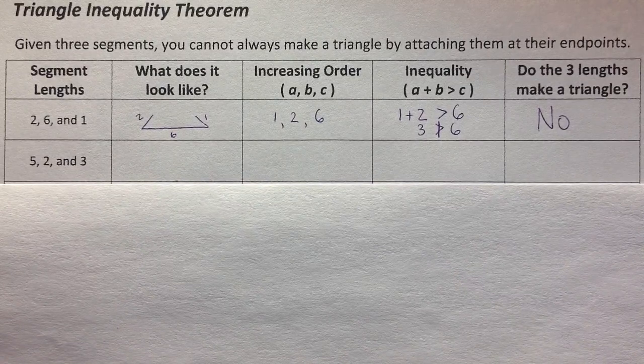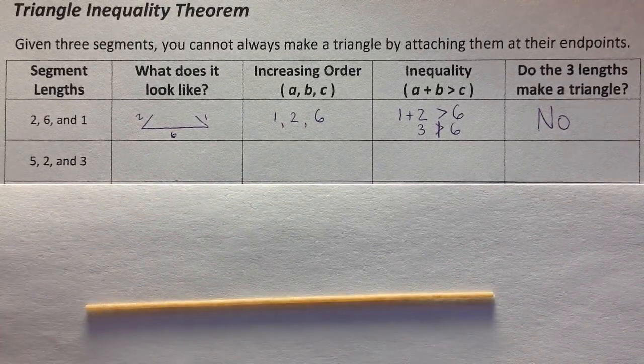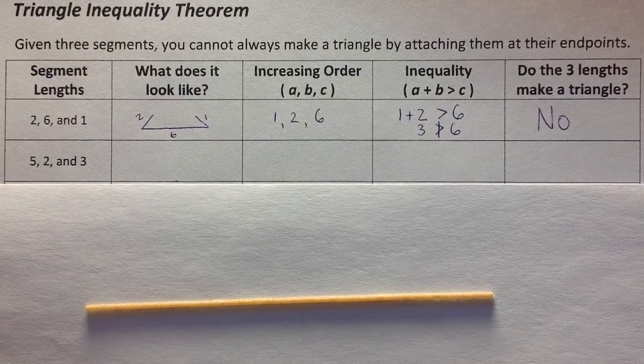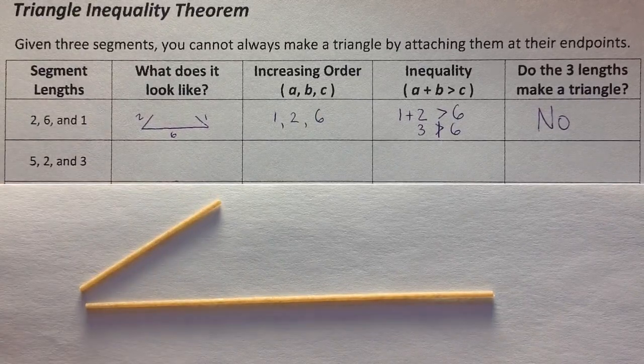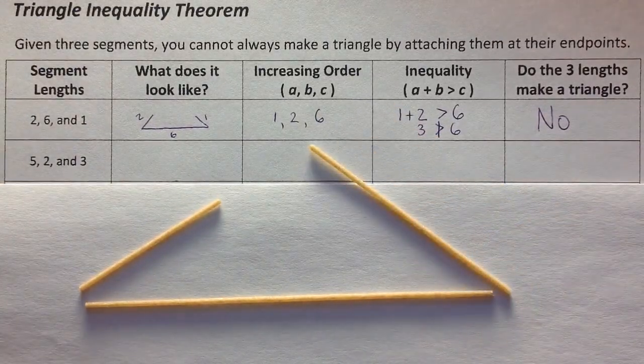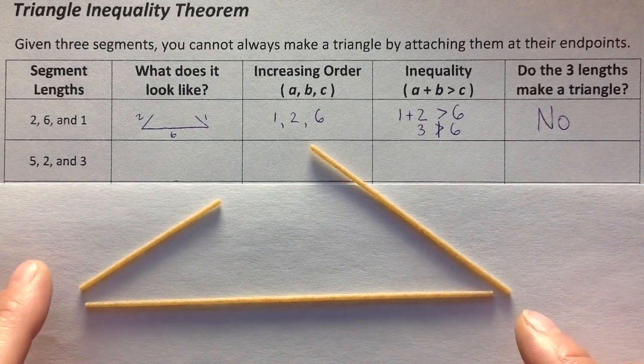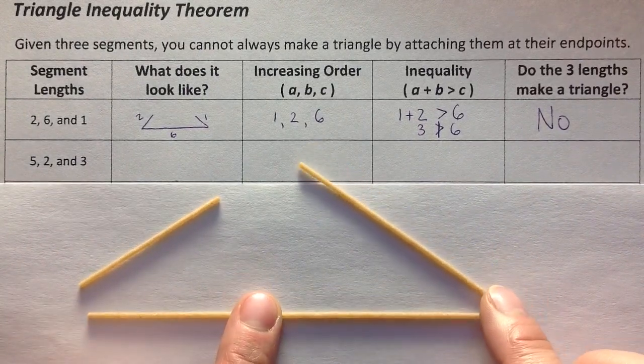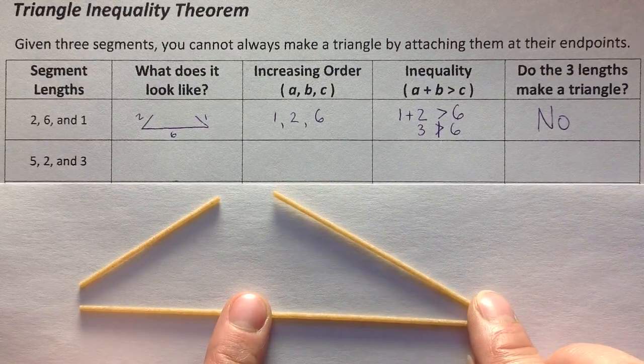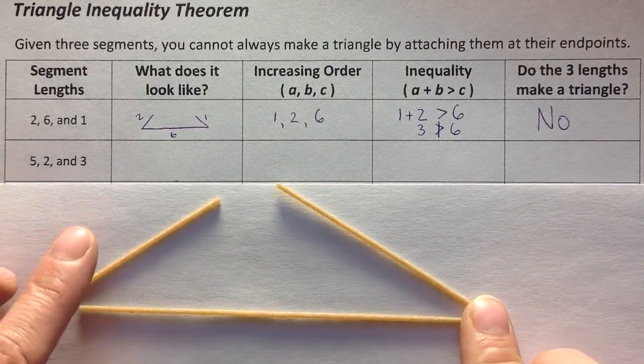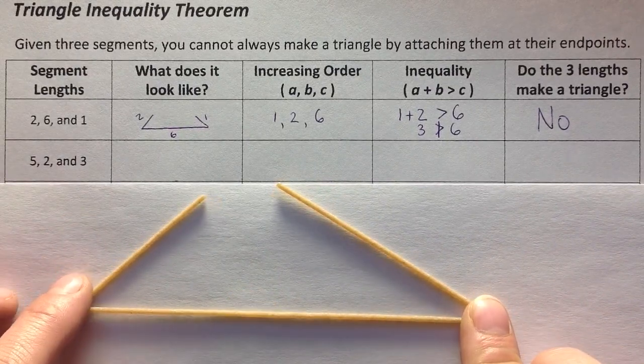5, 2, and 3. So this noodle is 5 inches. This one's 2 inches, and this one's 3 inches. So for this one, if I picture them attached to 5, my longest segment, can't get them attached. This one's going to be pretty close, so I have to be kind of exact.